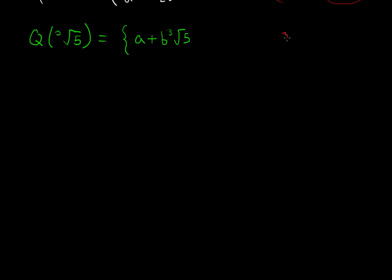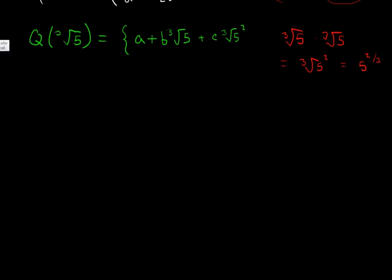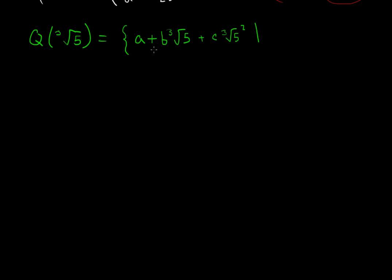The cube root of 5 is going to be in there. But this needs to be closed under multiplication. So we need to multiply ∛5 times ∛5, which is just (∛5)², or 5 to the 2/3. As of right now we don't have a way of representing (∛5)² in this form. So we're going to need to add on (∛5)² as well, multiplied by any rational scalar, adding another constant C. So the set is { a + b·∛5 + c·(∛5)² } such that A, B, and C are rationals.